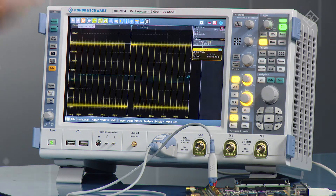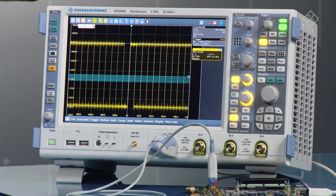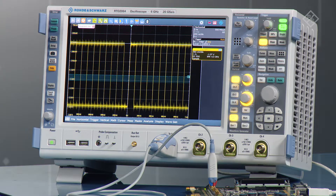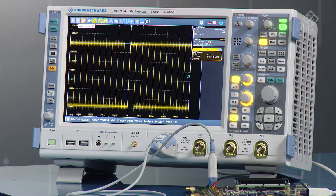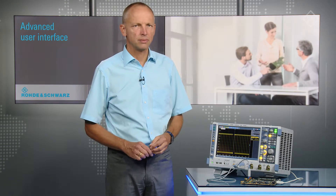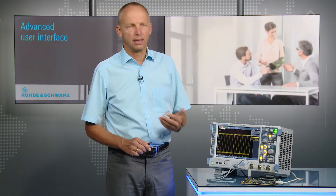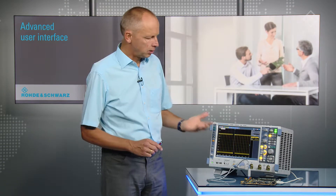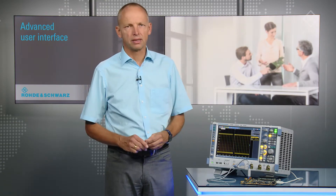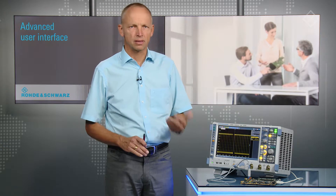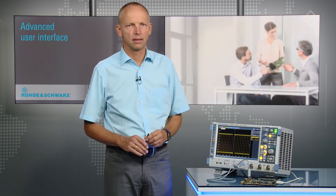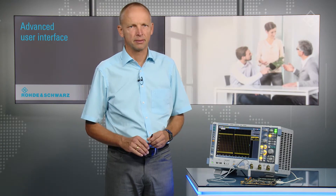Alternatively to pressing Load, you can double tap. There you go — you loaded the setup. It's very easy to select the right setup that fits your measurement because you always see the graphical display showing what was on screen when you stored the setup.